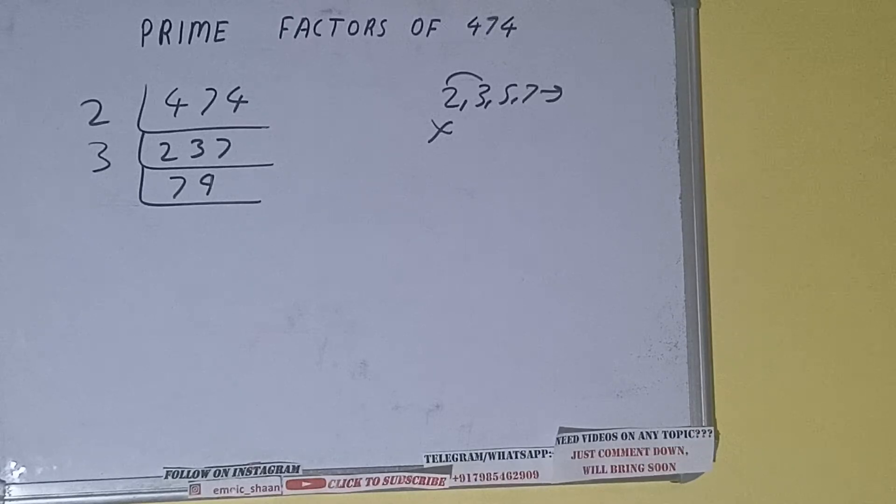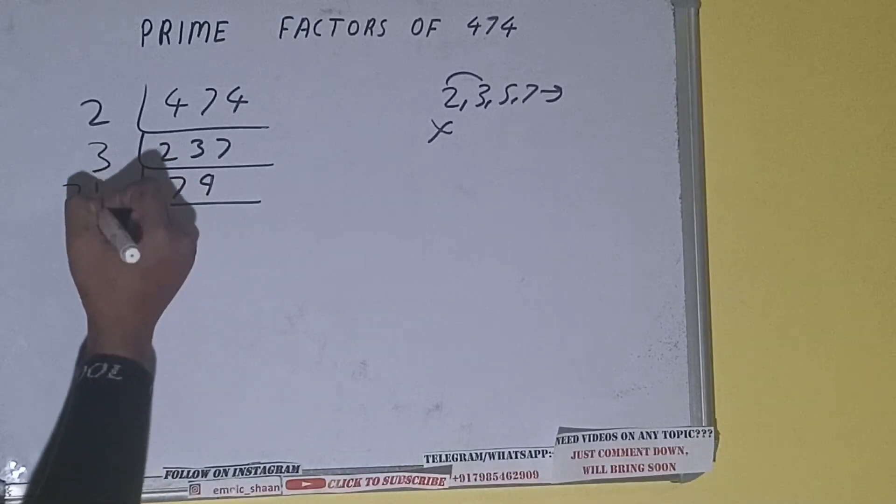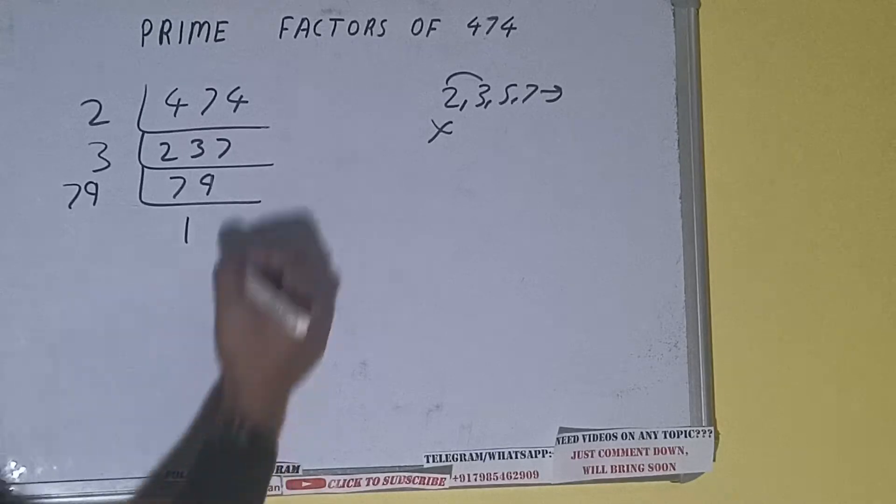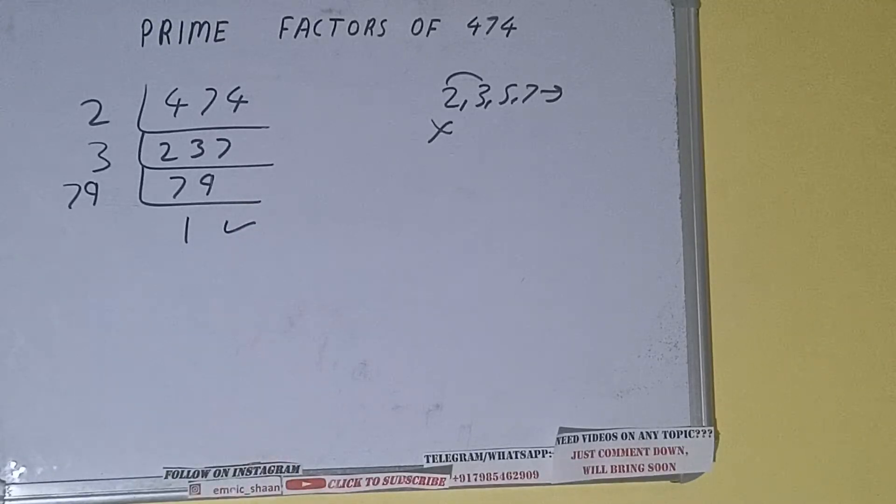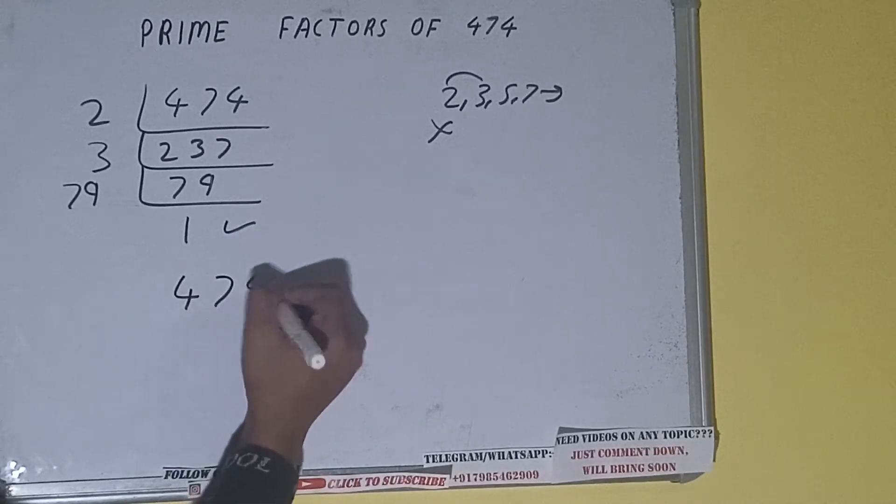So it is only divisible by itself, that is 79. And once we do so, we'll be getting 1. Once we get 1, we need to stop and do one last thing.